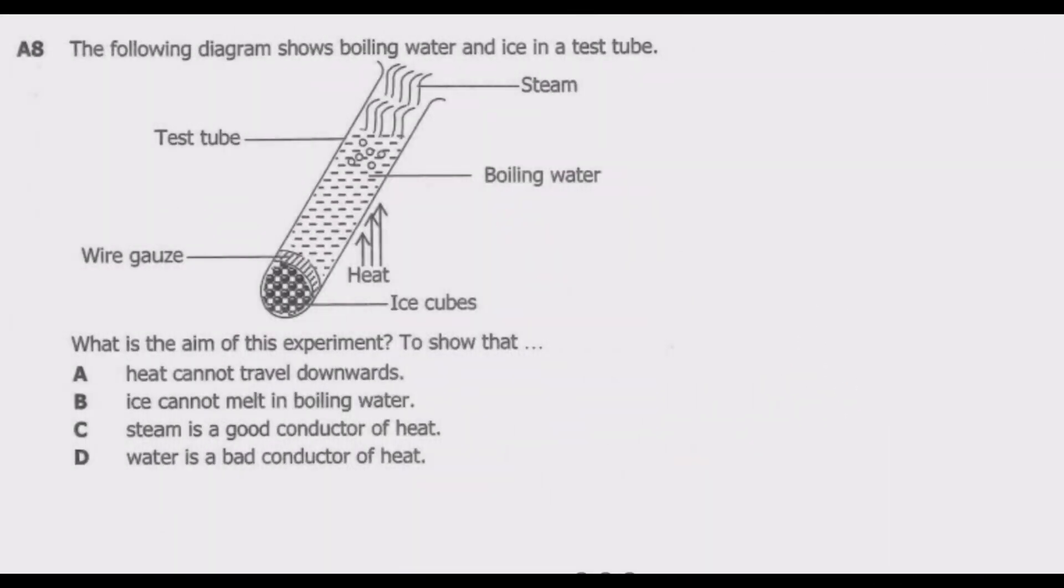Let us look at question A8. The following diagram shows boiling water and ice in a test tube. So we have steam, boiling water, test tube, wire gauze, ice cubes, then heat. The question: What is the aim of this experiment? So basically we need to identify the aim of this experiment. That's what the question requires us to do.